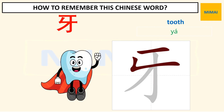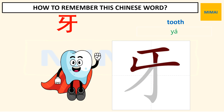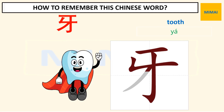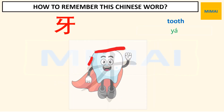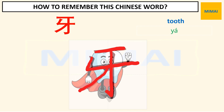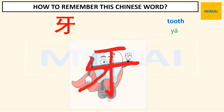This word looks like a hero tooth with one hand raising. His cape is flying to the left. The word is drawn with a horizontal line on top for the tip of the tooth. The left hand is raised, the right hand is spread. A curve on the left, a straight line with hooks for legs.